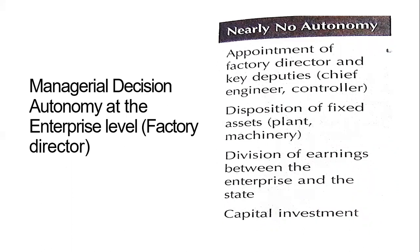The decision-making authority is divided into three different levels. You will have nearly no autonomy on certain decisions, you might have a moderate level of autonomy on other things, and you might have complete discretionary authority on things that are in your full control within your factory.